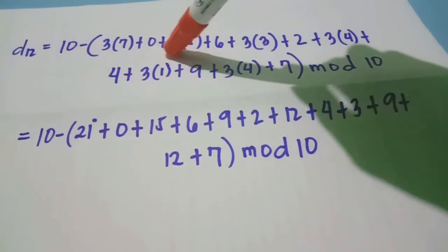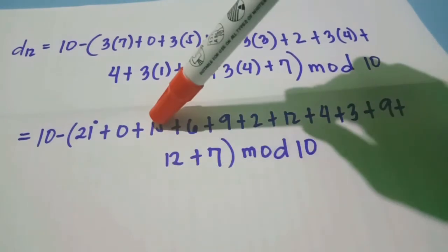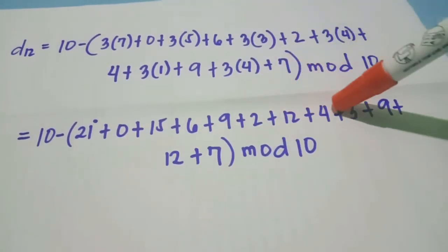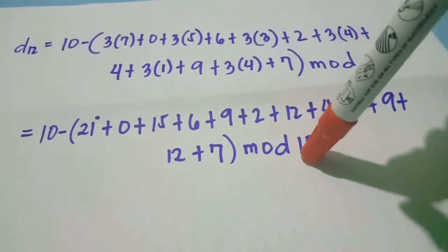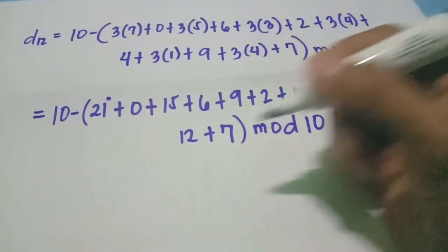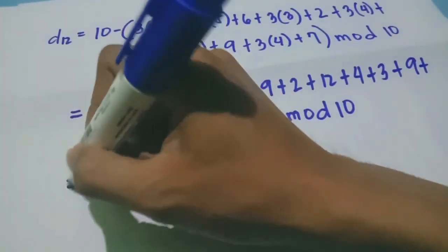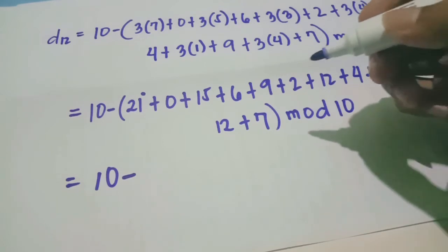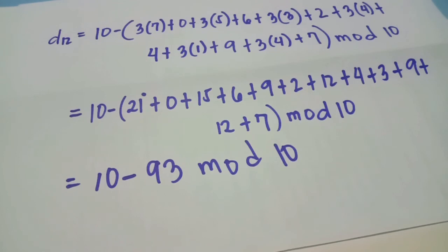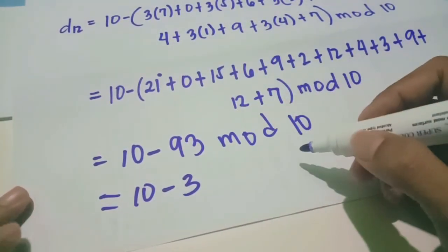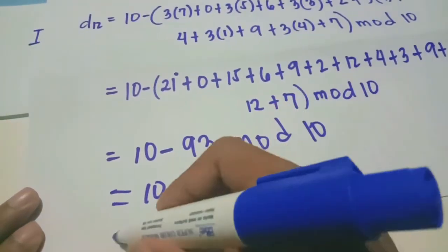So multiply what's in the parentheses first to make it easier to add. So 10 minus quantity, 3 times 7 we have 21, plus 0, plus 3 times 5 we have 15, then 6, plus 3 times 3 we have 9, 2, plus 3 times 4 we have 12, up to 7, then modulo 10. Next, add all the values in the quantity. We have 10 minus, add them all, the answer is 93, mod 10. So we know 93 divided by 10 would be 9 and then remainder 3. Therefore 3, or 10 minus 3, then equals 7.